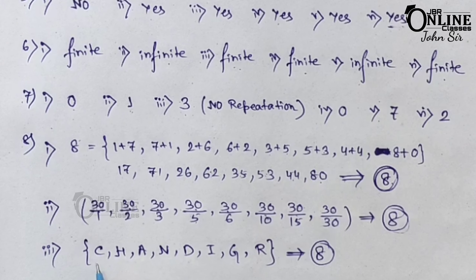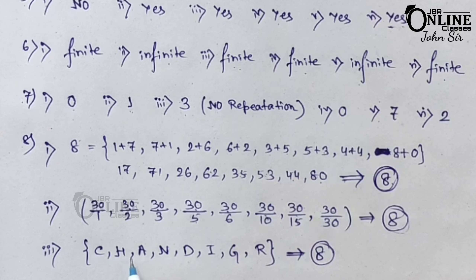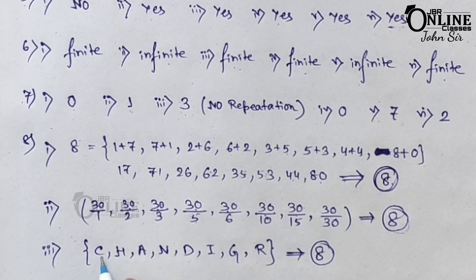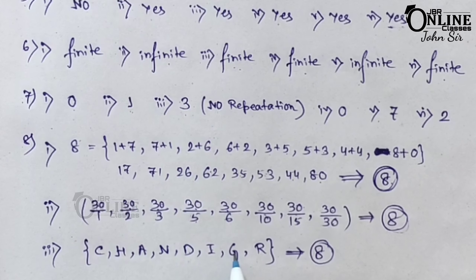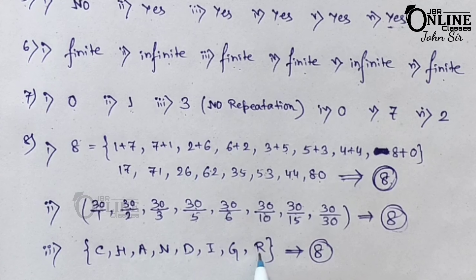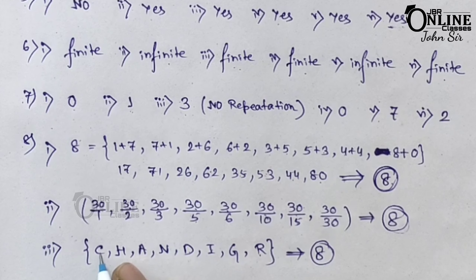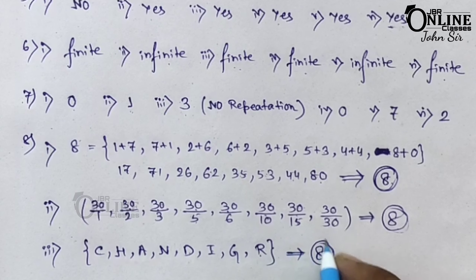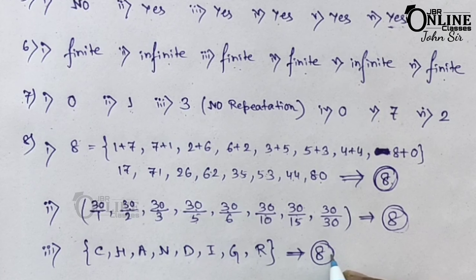Number 3: what is the cardinal number of the set x where x is a letter in the word 'Chandigarh'? The distinct letters are C, H, A, N, D, I, G, and R. Counting: 1, 2, 3, 4, 5, 6, 7, 8 — only 8 letters. No repetition allowed. So the cardinal number is 8.